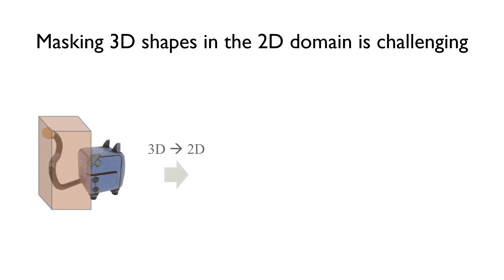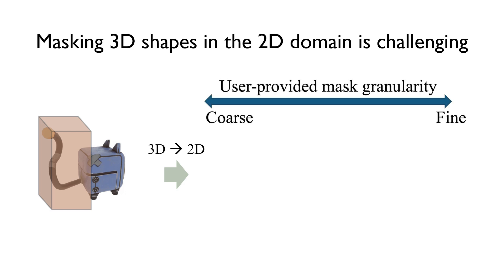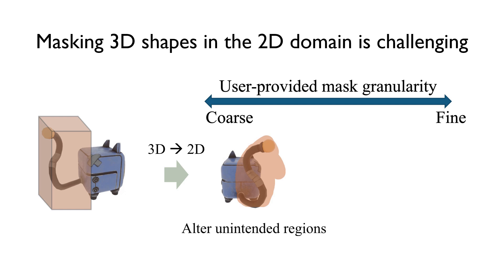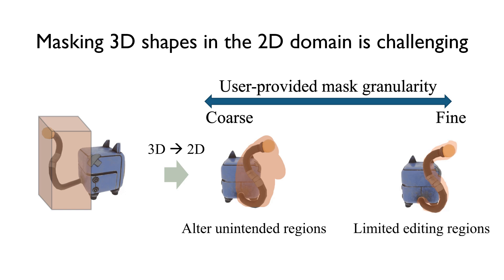However, using only 2D multi-view masks is challenging for 3D editing due to depth ambiguities. A coarse mask is easy to specify but will naively result in editing more than desired. Limiting the mask to finely specified regions takes more effort and often overly constrains edits to within that mask.